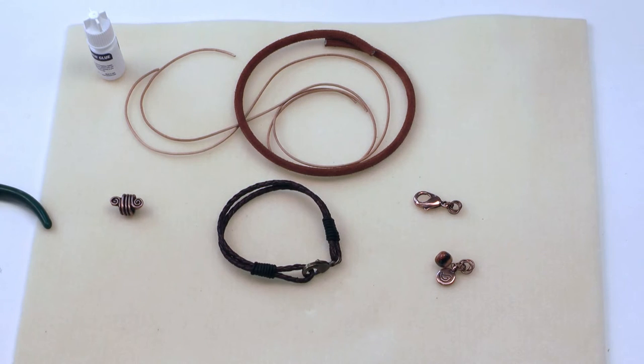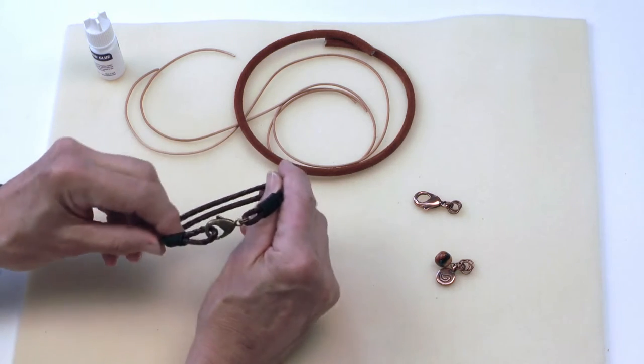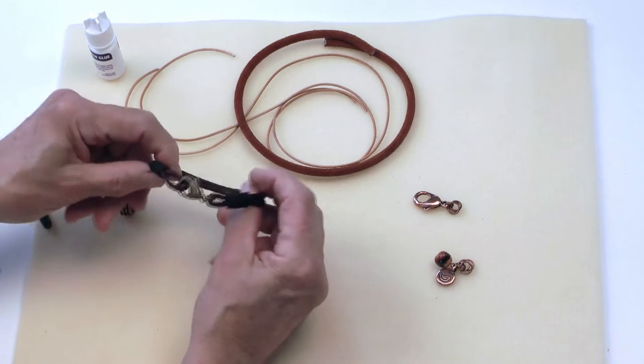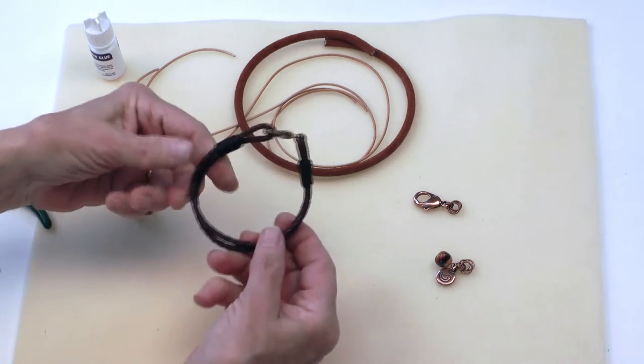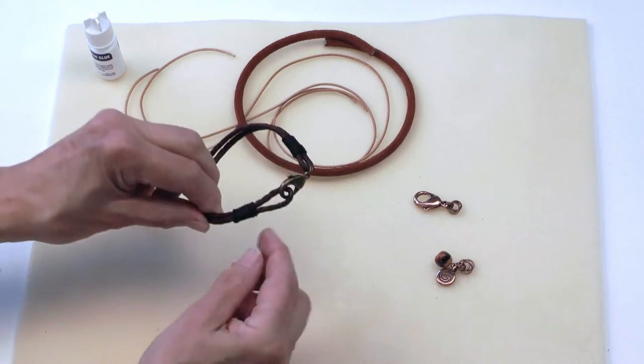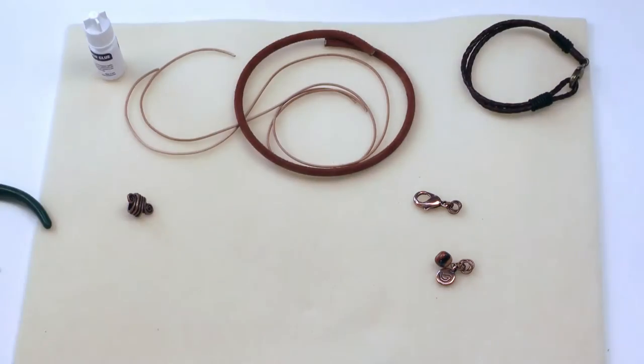Hello, this is Elaine with Antelope Beads. In this video I'm going to show you how to use a coil knot to make a bracelet where we completely hide our ends inside of the knots. On this bracelet you can't even tell where we've made our cuts or where we folded the leather, so let's go ahead and get started.